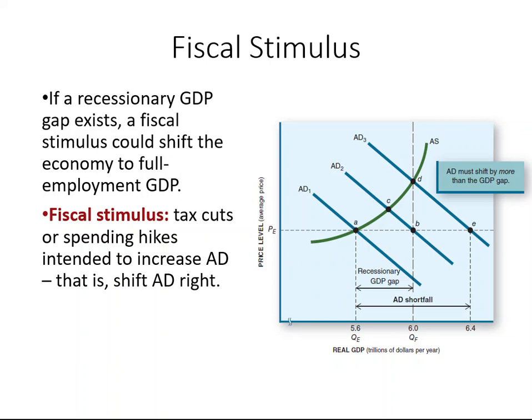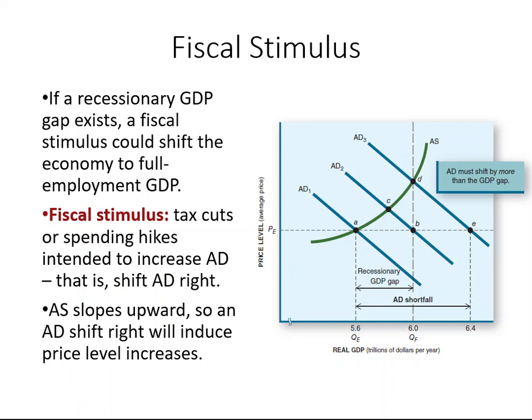To understand fiscal stimulus, first you need to know what the goal is — the goal is to shift the AD curve to the right. Second, you have to understand that the effect of fiscal stimulus will be broader than what the government actually spends, because of the multiplier effect. The general strategy is very clear; however, the scope of the desired intervention is not, so we need to ask two more questions.